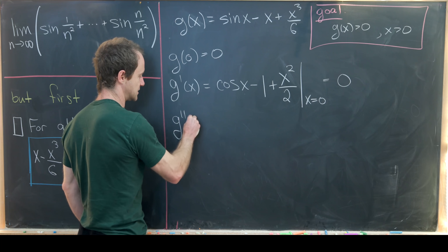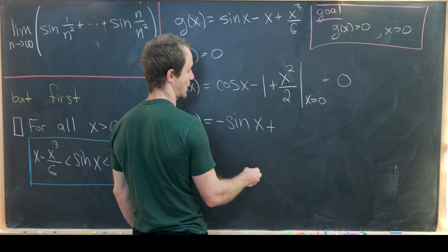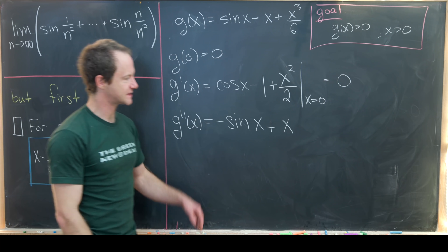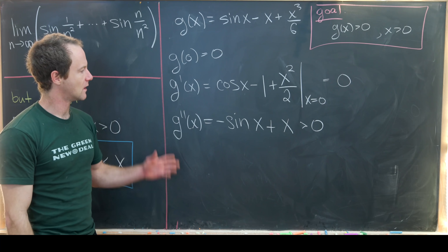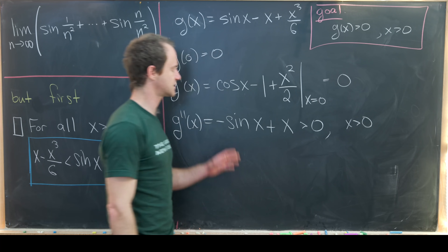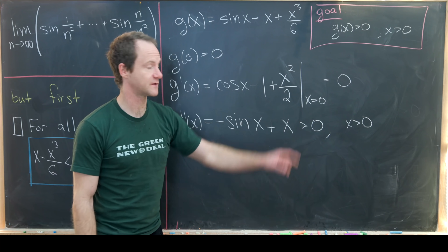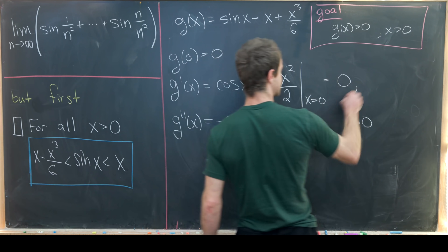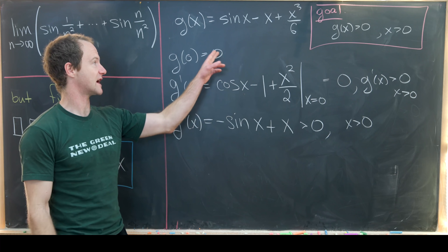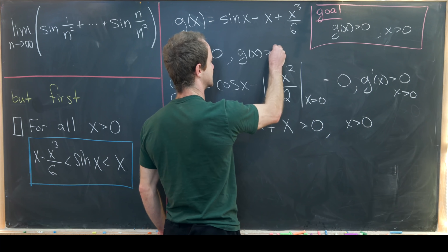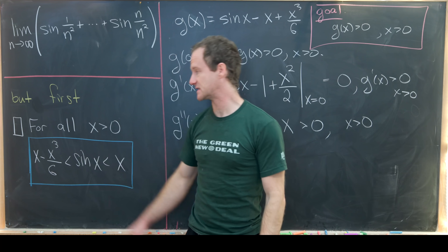Looking at the second derivative, g double-prime of x equals minus sine of x plus x. From our first inequality already proven, we know that x minus sine of x is always positive, so this second derivative is always positive when x is bigger than 0. That means the first derivative grows from 0, so g prime of x is bigger than 0 for x greater than 0. Taking that chain all the way to the top, our function g of x is bigger than 0 when x is bigger than 0 — exactly what we wanted to prove.